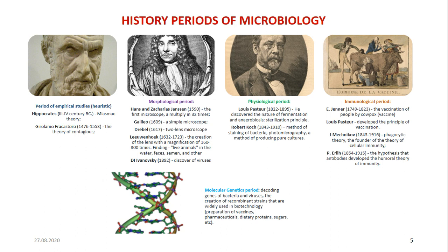Girolamo Fracastoro wrote in his main work on contagion, contagious disease, and treatment. He suggested that epidemics are caused by tiny particles — seeds — carried from the patient through direct, indirect, or even eye contact. These seeds in his term are closer to chemical and atomistic elements than to living things.